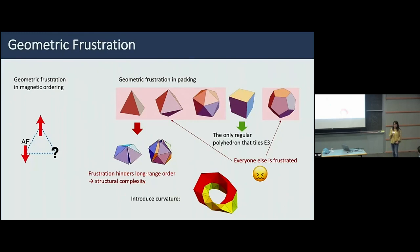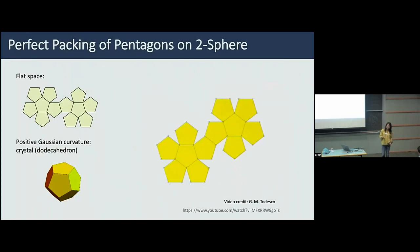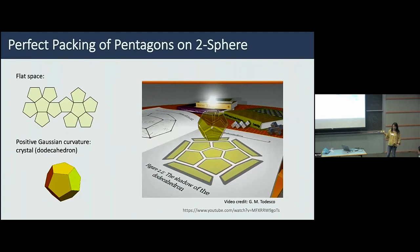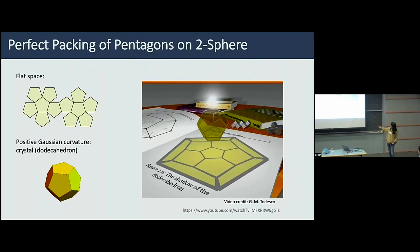Let me give a simple 2D example. Imagine tiling the plane with pentagons — there's geometric frustration because the interior angle is smaller than 2π/3, so you get gaps. However, when you introduce positive Gaussian curvature, you can perfectly close the gap and get a perfectly ordered structure: a dodecahedron. When you project this perfect dodecahedron to flat 2D space you get a distorted image, because you're forcing a 3D structure into 2D. The actual 3D structure is a perfect crystal where every pentagon is equivalent and all nodes live on a two-sphere.